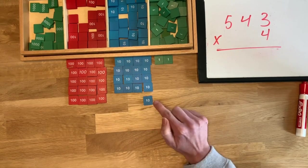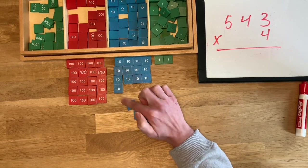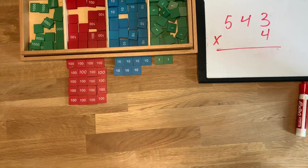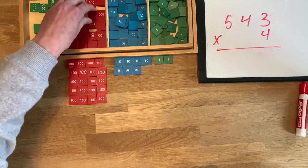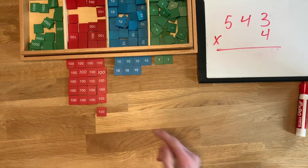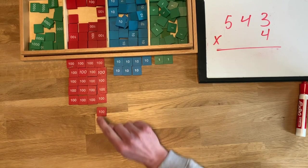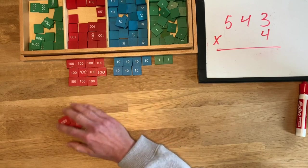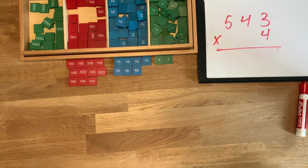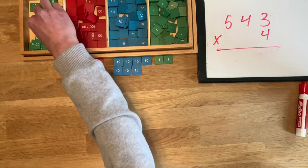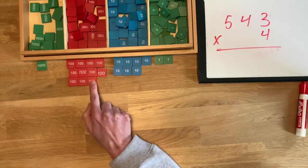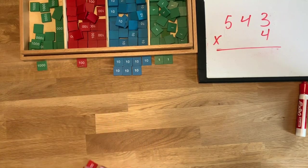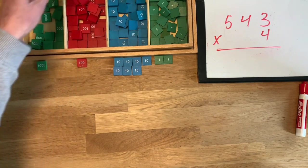One, two, three, four, five, six, seven, eight, nine, ten — we exchange ten units for one ten. This looks like more than ten, so I'm going to count out ten: one, two, three, four, five, six, seven, eight, nine, ten. We exchange ten tens for one hundred. Then count ten again and exchange for one thousand, and another exchange for another thousand.